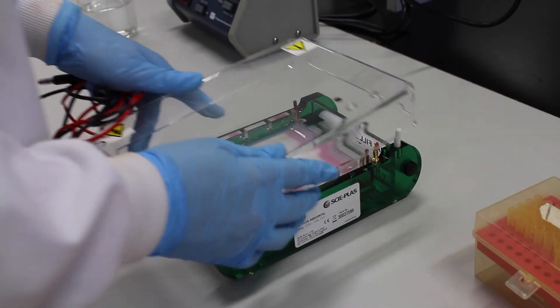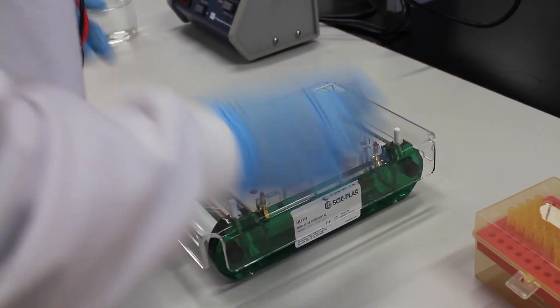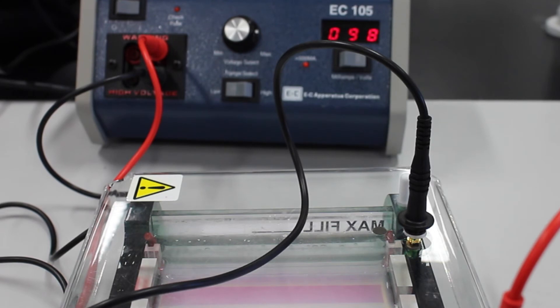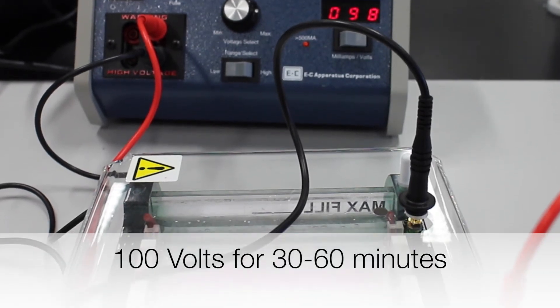The gel is now covered and the electrodes are applied. The gel is run at 100 volts for 30 to 60 minutes.